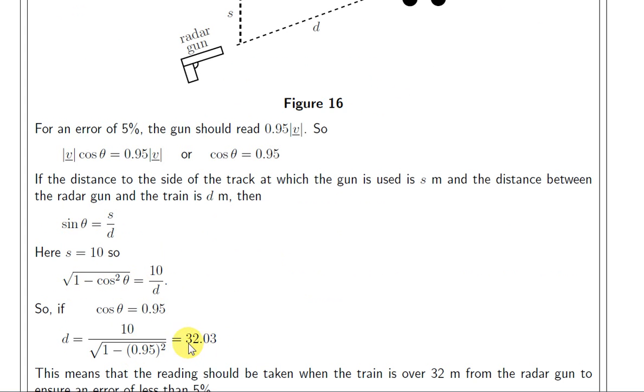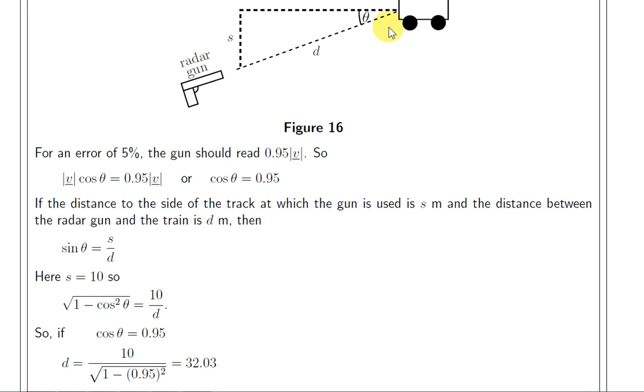So, if she stands at a distance of exactly 32.03 metres from the train, or when the train reaches that distance from her, of course, then the value that she gets on the radar gun will be 5% below the true speed of the train.